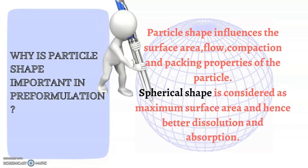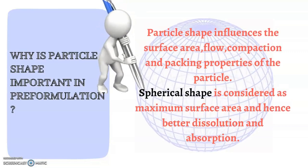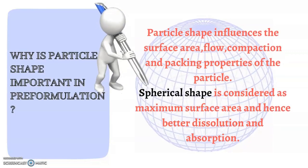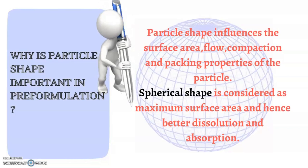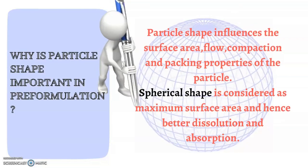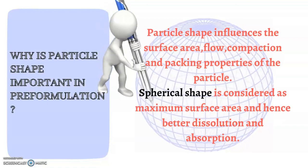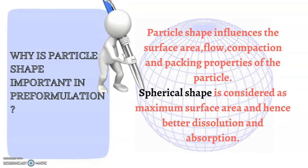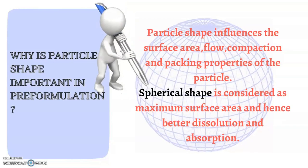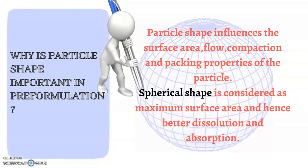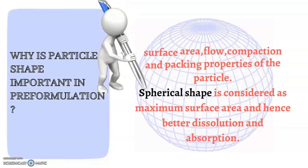Moving on, another physical property is particle shape. How does a particle appear in its shape? Why is particle shape important in pre-formulation? Particle shape influences the surface area, flow of particle, compaction and packing properties of particle. Spherical shape is considered as maximum surface area and hence better dissolution and absorption.